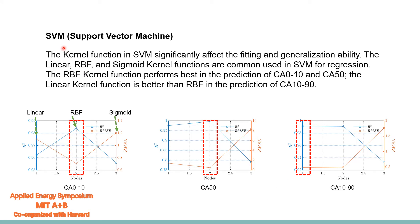This is the support vector machine, named SVM. The kernel function in SVM significantly affects the fitting and the generalization ability. The linear, RBF, and sigmoid kernel functions are commonly used in SVM for regression, also called SVR. The RBF kernel function performs best in predicting CA0-10 and CA50.